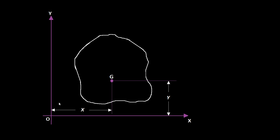Now there is another term — moment of inertia — which is the second moment of area, volume, or mass. What is the second moment? Simply, you multiply the area two times with y.